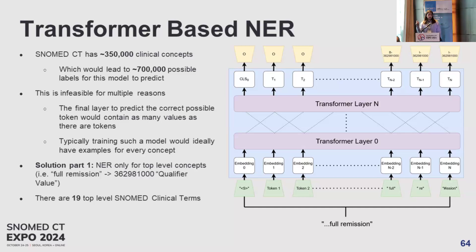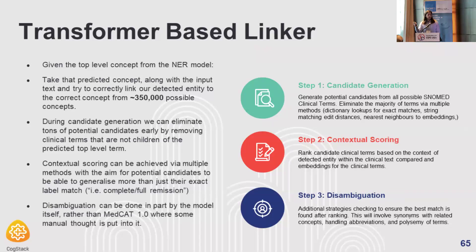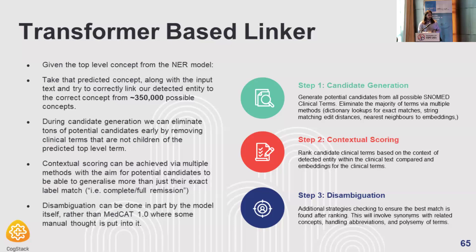So what we've done instead is to just predict the top-level concepts — things such as qualifier value, finding, and so on. Then we have another step: a linker. There are three steps in the linker. First is candidate generation — there are multiple ways we can generate candidates, such as nearest neighbors, dictionary lookups for exact matches, edit distances. We'll generate around 100 potential candidates. Then we do contextual scoring, scoring them based on a similarity measure or a learned method to find the highest one as our prediction. We can also do some disambiguation to ensure the best match is found after ranking, looking at synonyms, abbreviations and polysemy. Compared to MedCAT 1.0, the disambiguation is done as part of the model feature rather than added on.